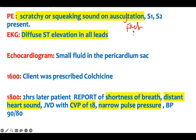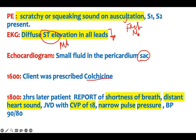There is diffuse ST elevation in all leads — also classic. An echocardiogram shows small fluid in the pericardial sac. So we have: chest pain relieved by leaning forward, aggravated by breathing, a scratchy sound on auscultation, and diffuse ST elevation in all leads. This is not a myocardial infarction — this is acute pericarditis. These are all classic symptoms.